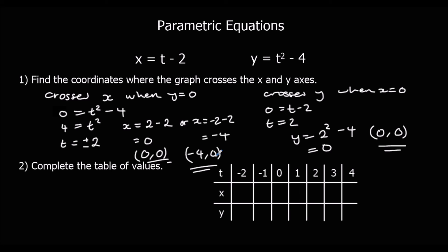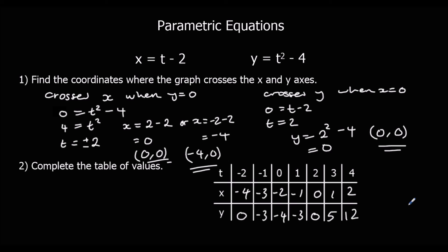Completing the table of values: substituting negative 2 into the x equation gives negative 4; negative 1 gives negative 3; 0 gives negative 2, and so on — it's just t minus 2 each time. For y equals t squared minus 4: t equals 2 gives 0, t equals 1 gives negative 3, t equals 0 gives negative 4, t equals negative 2 gives 0, t equals 3 gives 5, and t equals 4 gives 12. We could then plot the x and y values to draw the graph.